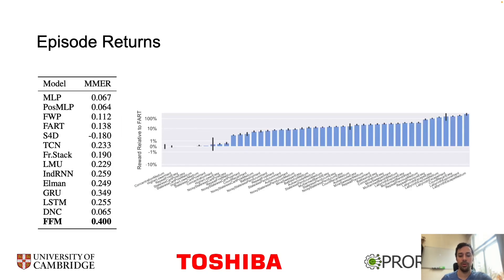We evaluated our model against 13 other memory models and 52 separate tasks, and found that our model outperforms the other baselines. On the left, you can see the aggregate score on the POPGym sweep, with our model, fast and forgetful memory, in bold — our score is about 15% higher than the next best score. On the right, you can see our model's return broken down by task, where on the x-axis we have individual tasks and on the y-axis we report the score of FFM compared relative to a linear transformer.